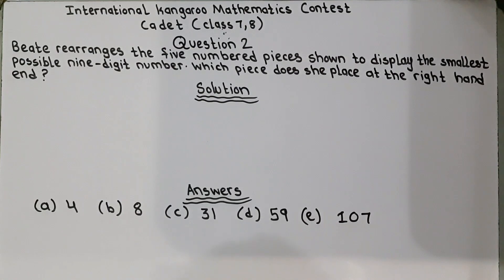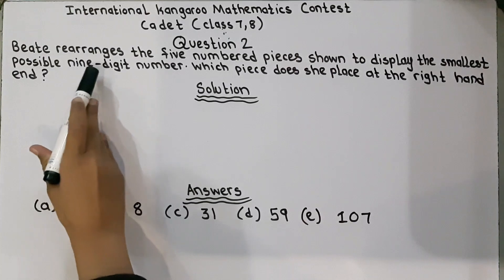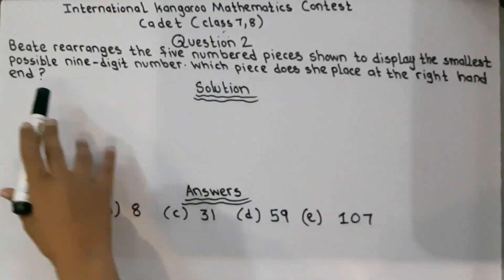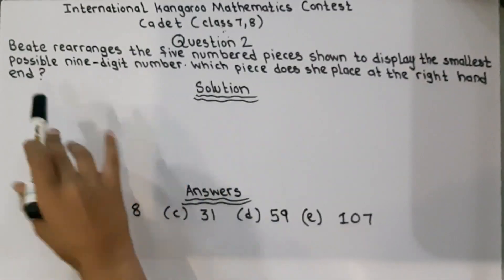The question number 2. The question is, Beat rearranges the 5 numbered pieces shown to display the smallest possible 9-digit number. Which piece does she place at the right hand end?